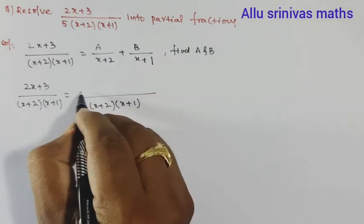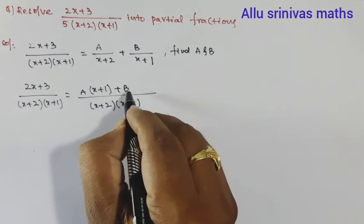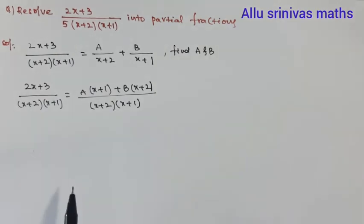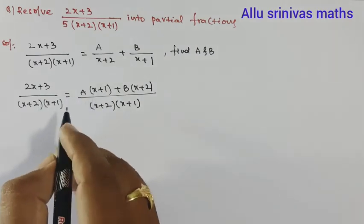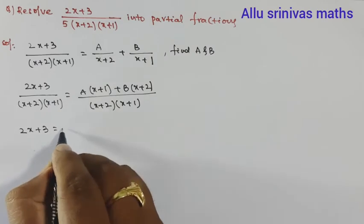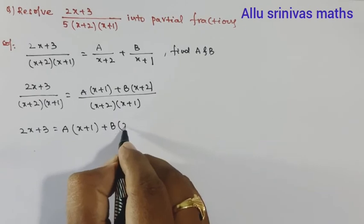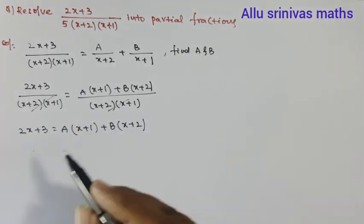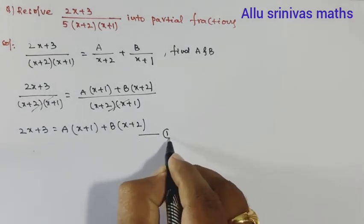It can be written as A times (x + 1) and B times (x + 2). Observing the two fractions, both denominators are equal. That is why the numerators are also equal: 2x + 3 = A(x + 1) + B(x + 2). Let us call this equation 1.